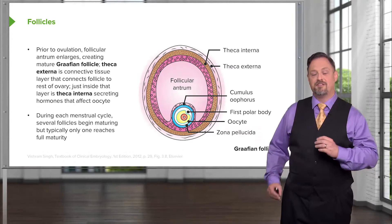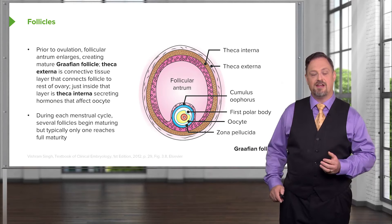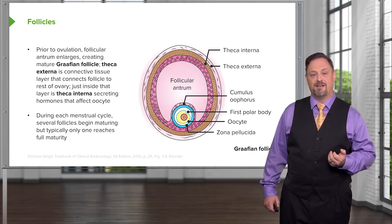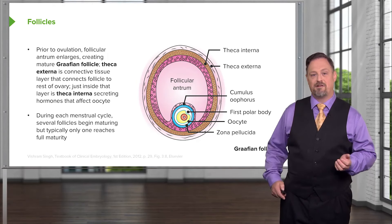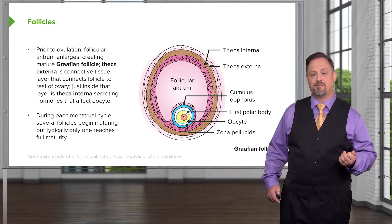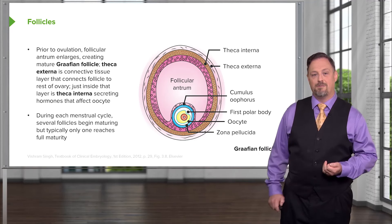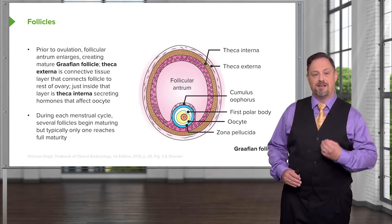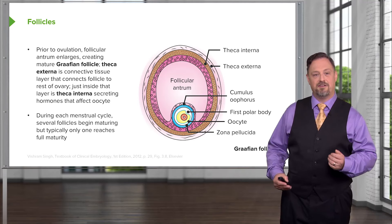During each menstrual cycle, several follicles race with each other to develop to this Graafian stage, but typically only one will actually be released from the ovary into the oviduct. The follicular antrum ruptures and the egg moves out into the reproductive tract, carrying the cumulus oophorus and the zona pellucida with it. We'll follow up further along the menstrual cycle and see how the uterus changes to accept the egg if and when it is fertilized.